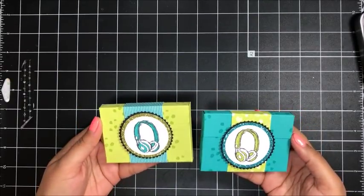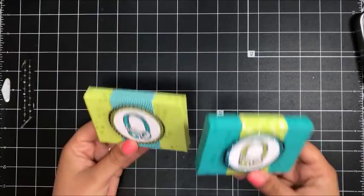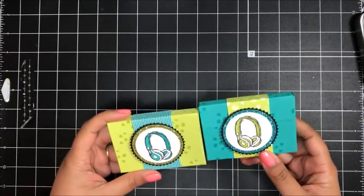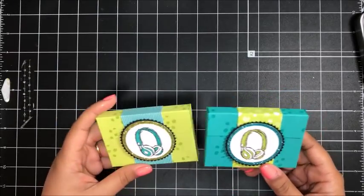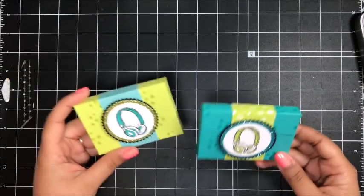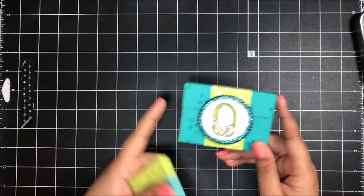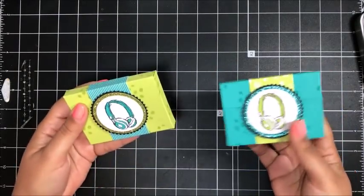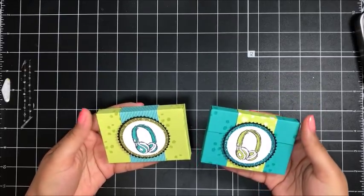Every month I do a make and take with my team of Quidobug Stampers. For the month of February, this was the make and take that we made at our live team meeting. They will each receive the consumable supplies to make either version of the project.